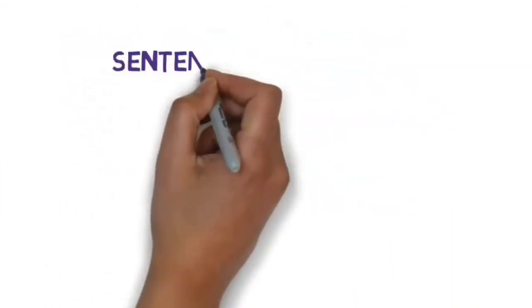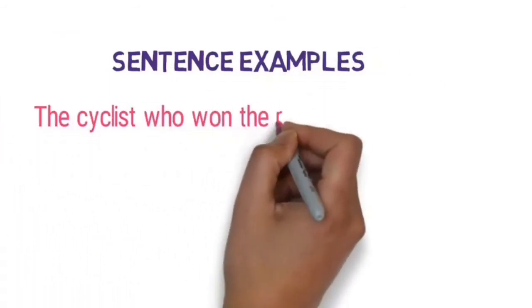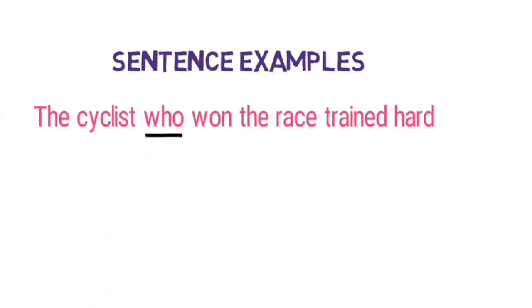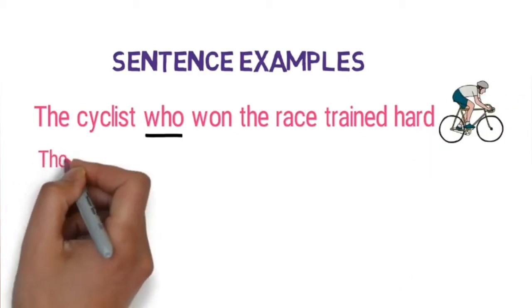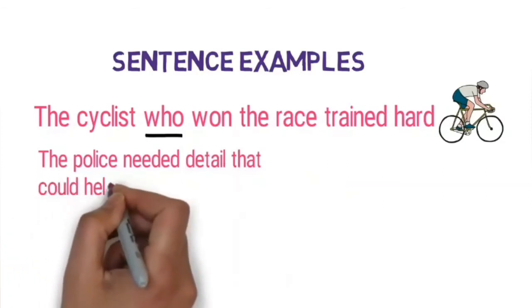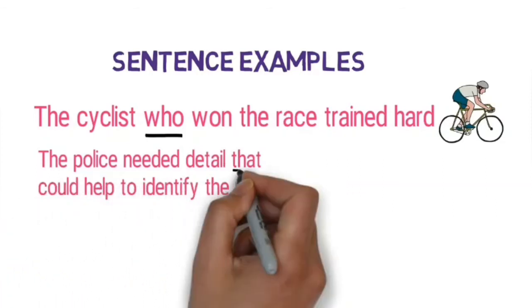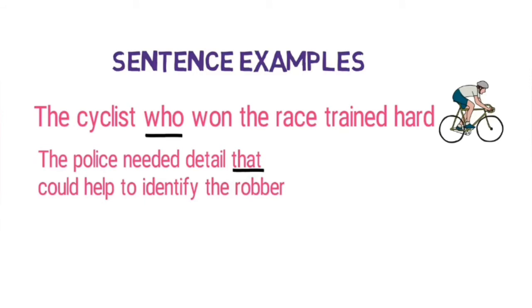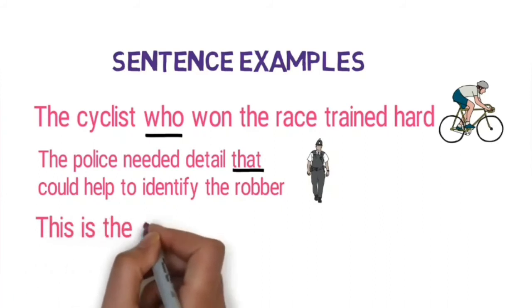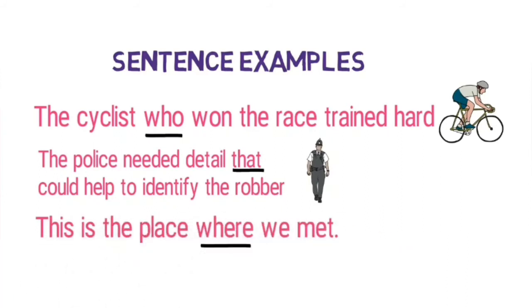Let's look at some sentence examples. 'The cyclist who won the race trained hard.' Here, 'who' is a relative pronoun referring to the cyclist — this is the reference for a noun which was previously used. Another example: 'The police need a detail that could help to identify the robber.' And: 'This is the place where we met.' 'Where' refers to the place and joins two parts of the sentence. So, if we do not want to repeat the noun, we use relative pronouns.